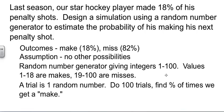So a trial is going to be generating one number, hitting the random number button on the calculator. That's going to be a trial. I'm going to get a number, I'm going to look at that number. Was it in 1 through 18? Then I'm going to mark make. Was it outside of 1 through 18? Then I'm going to mark miss. And I'm going to do it 100 times, and then count how many makes I have to get a percentage of what probability he has of hitting the next shot.